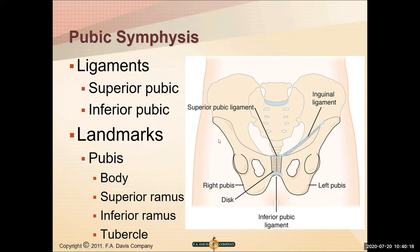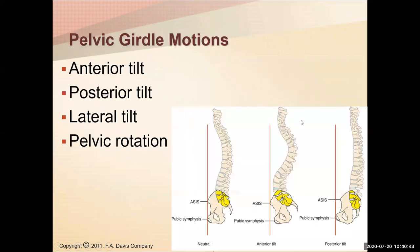At the pubic symphysis, we have our superior and inferior pubic ligaments. We also have discs between the pubic bones that are mainly there for shock absorption. And then there's our inguinal ligament, which helps form our femoral triangle.